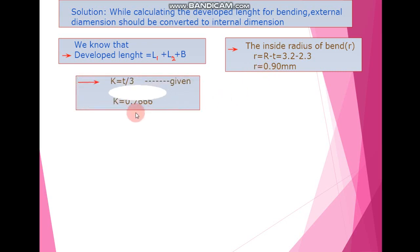Next, k is equal to t divided by 3. With the value of t equal to 2.3, dividing by 3 we get the value of k equal to 0.766.